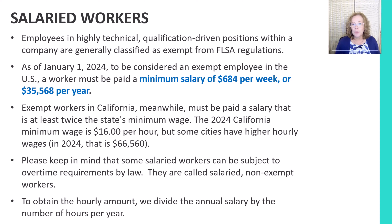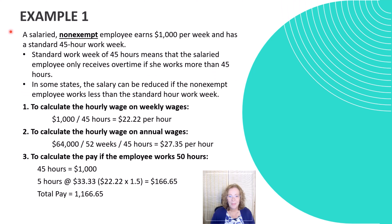To obtain the hourly amount for a salaried worker, we divide the annual salary by the number of hours per year. Here's an example: a salaried non-exempt employee earns $1,000 per week and has a standard 45-hour workweek. The 45-hour workweek means the salaried employee only gets overtime when they work more than 45 hours per week. Non-exempt means this employee is subject to overtime. To calculate the hourly rate, we divide the weekly wages by the standard workweek hours. Some employees may have a 40-hour workweek, some 37.5 hours — this employee has 45 hours. So we divide $1,000 by 45 and find $22.22 per hour.